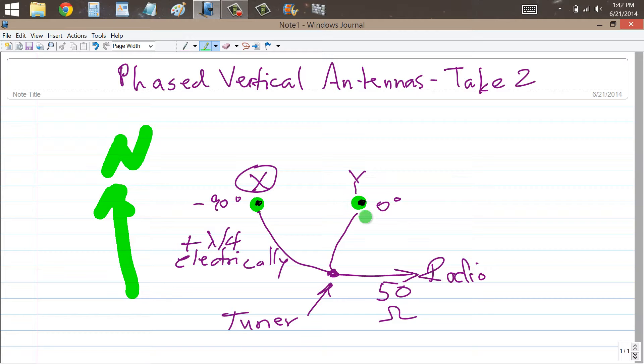This signal's already 90 degrees behind this one in phase. As it traverses this quarter wavelength span, it's going to get 90 more degrees out of phase. So in the easterly direction, we're going to see phase cancellation. That's going towards the east.